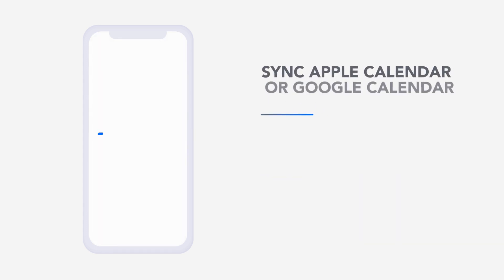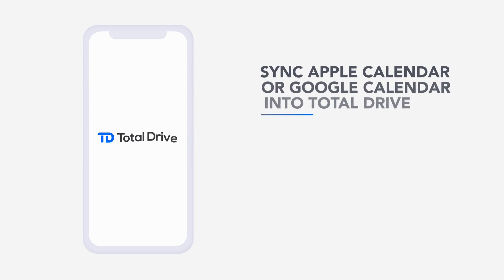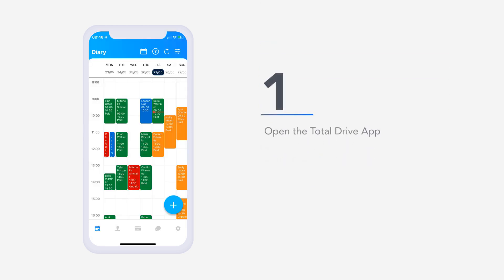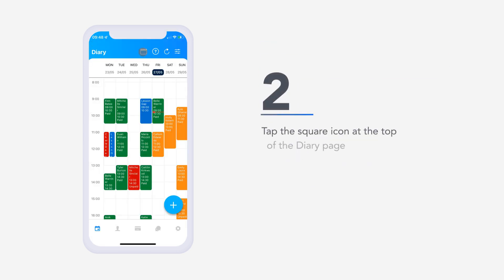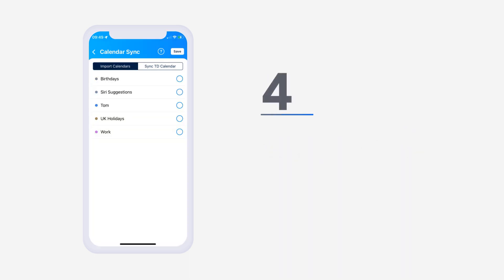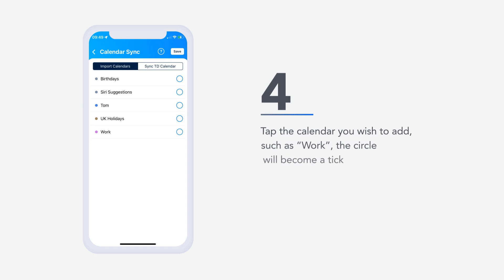Sync Apple Calendar or Google Calendar into Total Drive. Integration suitable for Apple and Android devices. One, open the Total Drive app. Two, tap the square icon at the top of the diary page. Three, tap the OK button for Total Drive to access your calendar. Four, tap the calendar you wish to add, such as work.